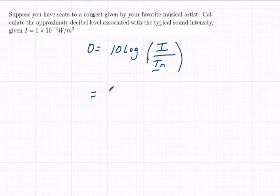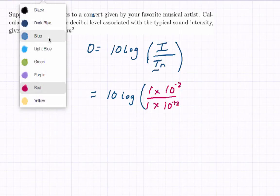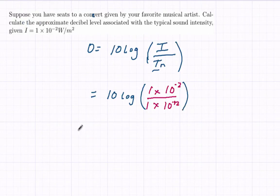We know what i sub n is because that's the least amount of intensity we can hear. We're looking for d here. So we're going to have 10 times the logarithm, and here's where we're going to substitute what we know. Our intensity is given by 1 times 10 to the negative 2, divided by our least intensity that we can hear, 1 times 10 to the negative 12. So we substitute.